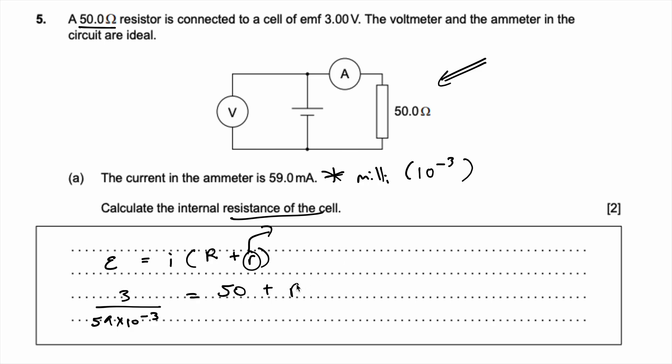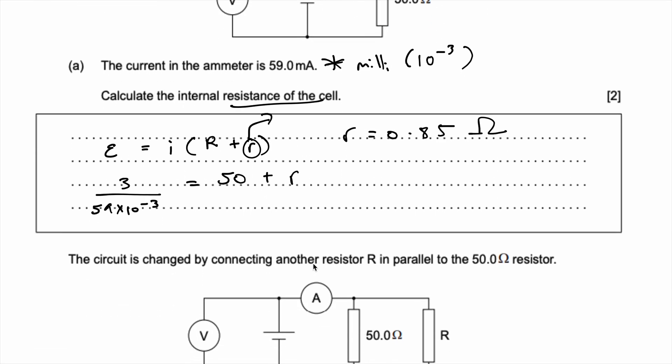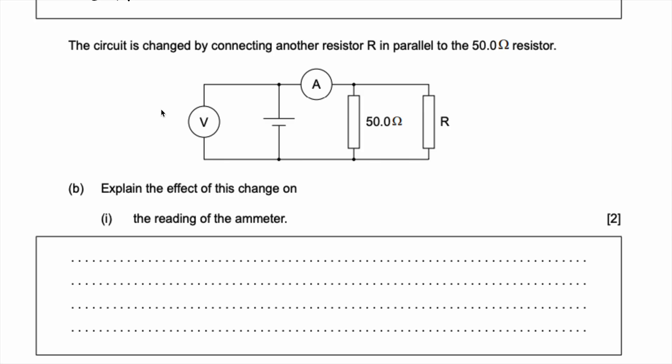Let's put this in the calculator and solve for r. We get 3 divided by 59 × 10⁻³, minus 50, divided by 59, which comes out to be r = 0.85 ohms. That's the internal resistance of the cell.